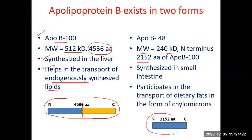ApoB48 is synthesized in the small intestine, whereas ApoB100 is synthesized in the liver. ApoB48 participates in the transport of dietary fats in the form of chylomicrons. After digestion of lipids in the small intestine, those chylomicrons are picked up by the lipoprotein which has ApoB48 in the outer shell, and that is transported in the body.